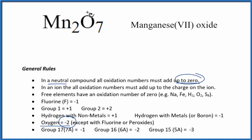So each of these 7 oxygens, minus 2, will be the oxidation number. And everything's going to add up to zero.